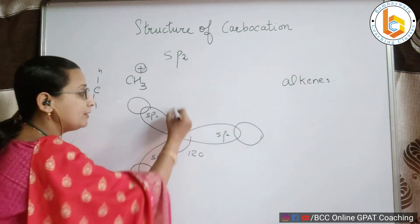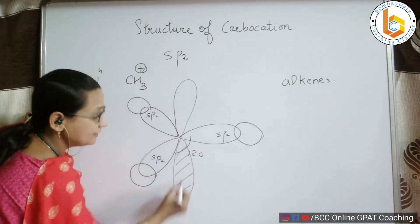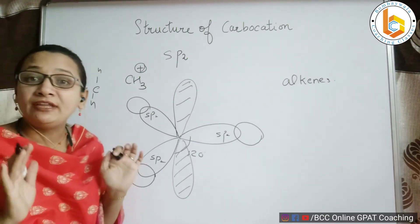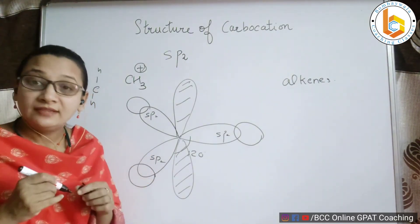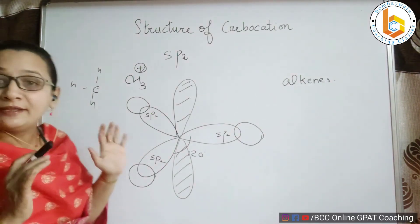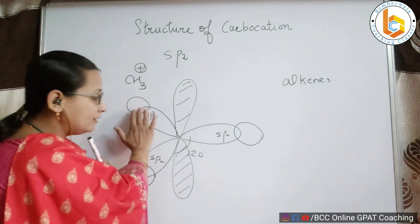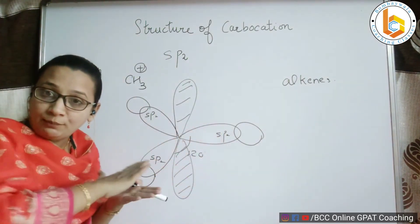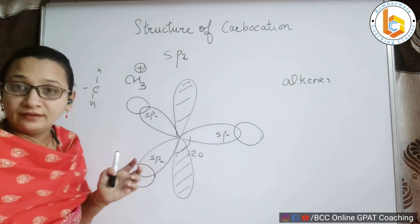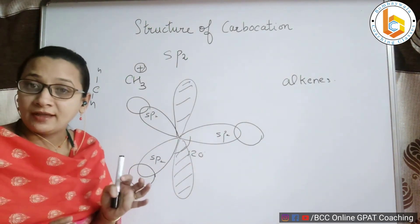Other than this, there is a p-orbital which lies perpendicularly. This p-orbital will be empty — it will not have any electrons. This is the structure of carbocation: it shows sp2 hybridization, it shows a planar geometry, lying on a plane, triangular, with a bond angle of 120 degrees, and the p-orbital in the carbocation is empty.